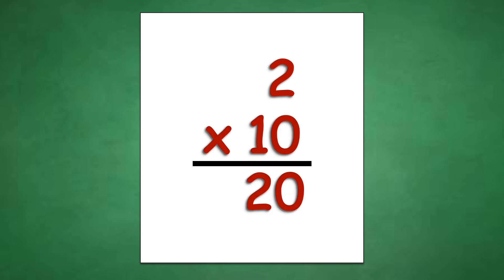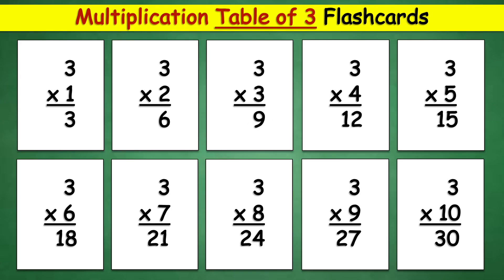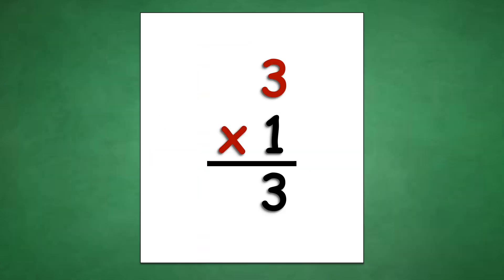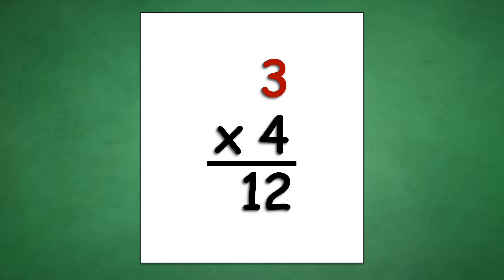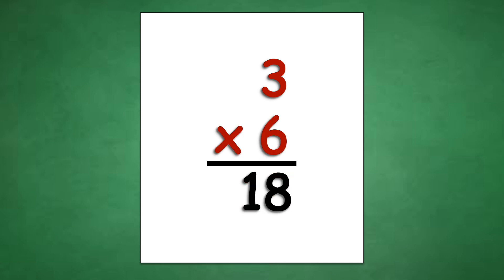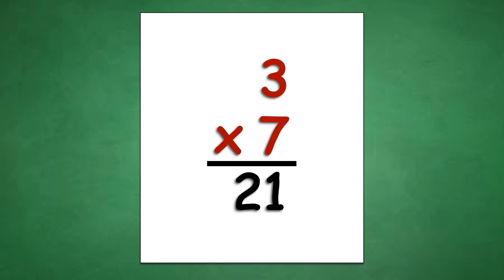Table of 3: 3 times 1 equals 3, 3 times 2 equals 6, 3 times 3 equals 9, 3 times 4 equals 12, 3 times 5 equals 15, 3 times 6 equals 18, 3 times 7 equals 21, 3 times 8 equals 24, 3 times 9 equals 27, 3 times 10 equals 30.